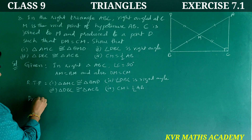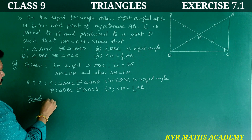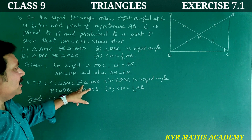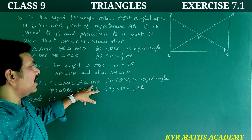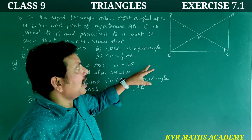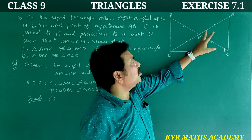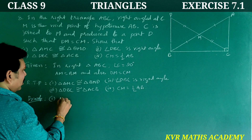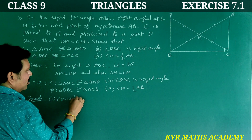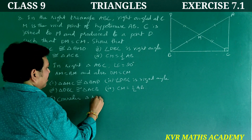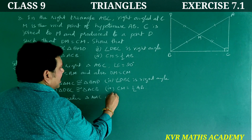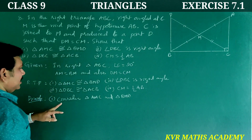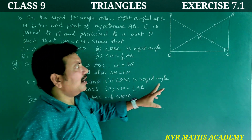Proof — First part: Consider triangle AMC and triangle BMD. AM is equal to BM (given, since M is the midpoint of AB). DM is equal to CM (given).